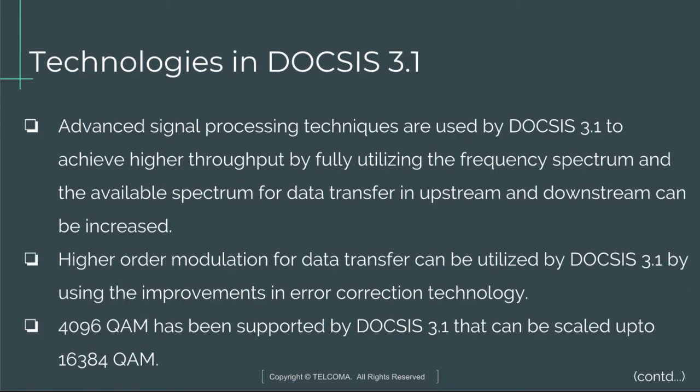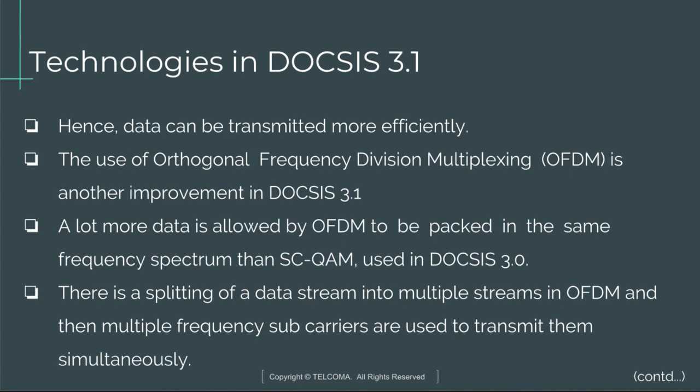Advanced signal processing techniques are used by DOCSIS 3.1 to achieve higher throughput by fully utilizing the frequency spectrum, and the available spectrum for data transfer in upstream and downstream can be increased. Higher order modulation for data transfer can be utilized by DOCSIS 3.1 using improvements in error correction technology. DOCSIS 3.1 supports 4096 QAM, which can scale up to 16384 QAM, enabling more efficient data transmission.